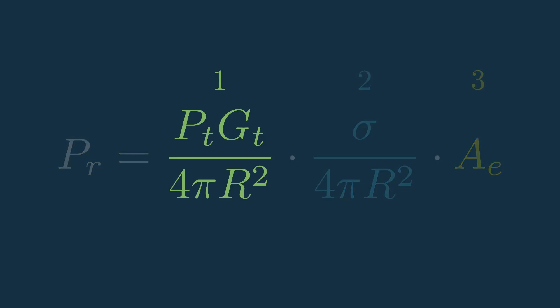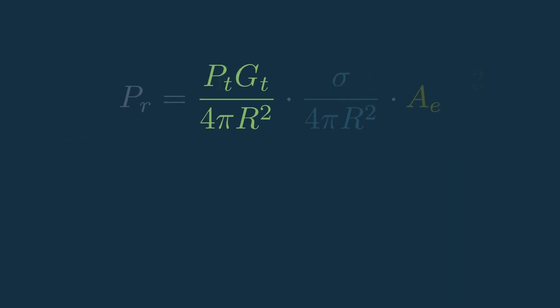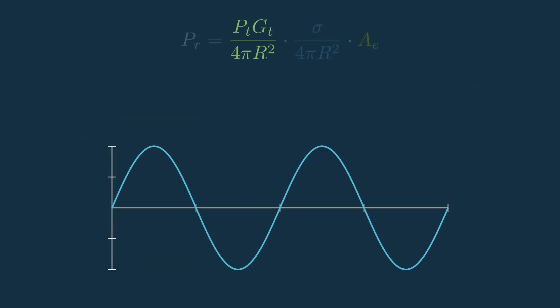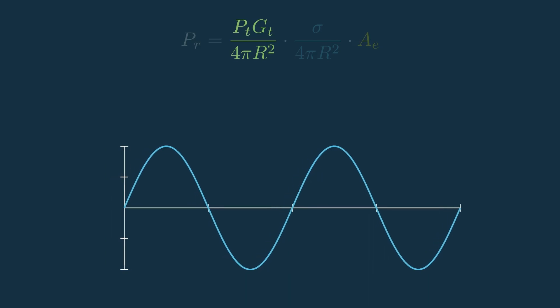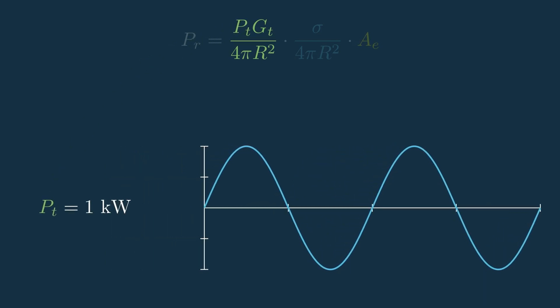So let's dive into the first section, which defines our signal's power as it's traveling toward the target. For a given system, we'll transmit a signal that has some power, PT, measured in watts. Let's say this system outputs 1 kW.